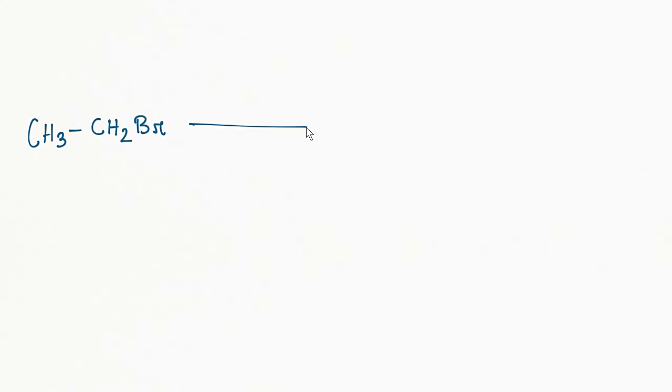When an alkyl halide is first treated with triphenylphosphine, and then the product of the reaction is treated with a very strong base such as butyl lithium, then Wittig reagent is formed.